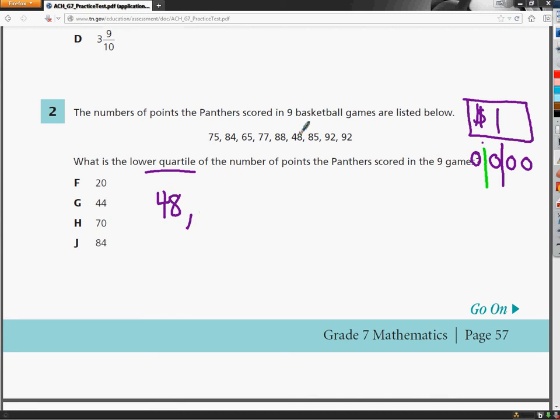48. Once I use it, I mark it out. There's no 50s, but there is a 65. So I'm going to put 65. Then I need to look for any more 65s. There's not one.